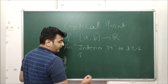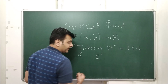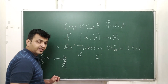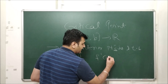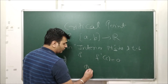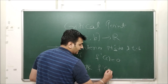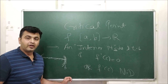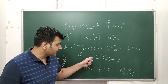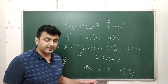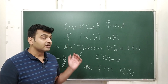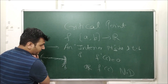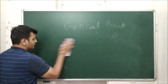An interior point C is said to be a critical point if the derivative at that point is zero, or the derivative at that point is not defined. Whenever either one of these conditions holds for an interior point, we call it a critical point. Let's look at some examples to clear up the facts.